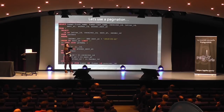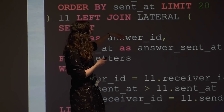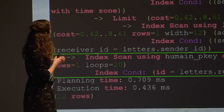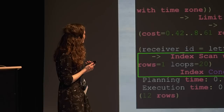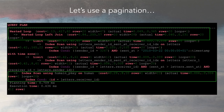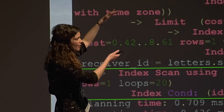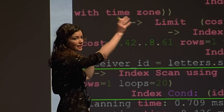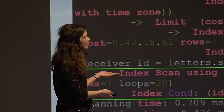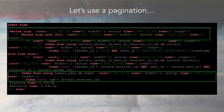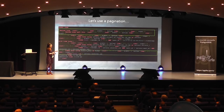With keyset pagination by 20 rows, the database switches to an index scan on human and uses a nested loop — because joining 20 rows with an index is the quickest approach. The query now takes just 0.4 milliseconds. Starting from 1,500 milliseconds in Python and ending at 0.4 milliseconds — a massive improvement.